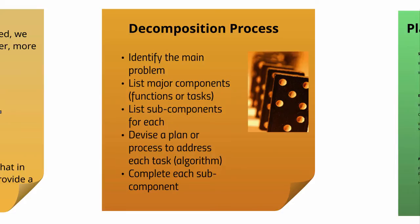A decomposition process might look something like this. Firstly, we could identify the main problem; we list major components, functions, or tasks; we list sub-components for each; then we devise a plan or a process to address each task, which is our algorithm; and then we complete each sub-component.